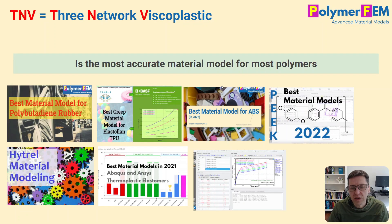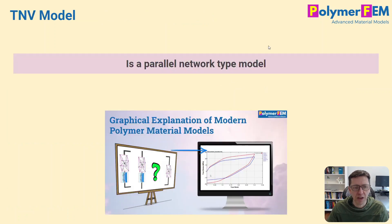And the reason I say that is that I have done a lot of studies the last couple of years where I investigate what is the best material model for rubber type materials, polyurethane type materials, thermoplastic materials. In all of these studies, almost always the material model that is the most accurate, that matches the experimental data the most accurately, is the TNV model.